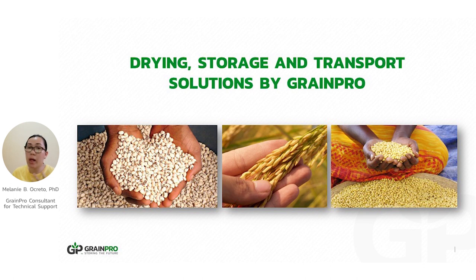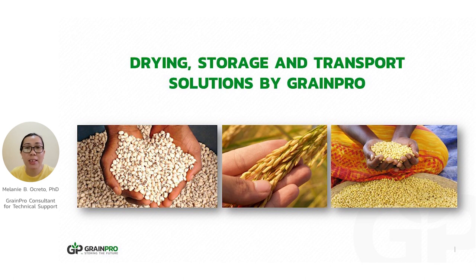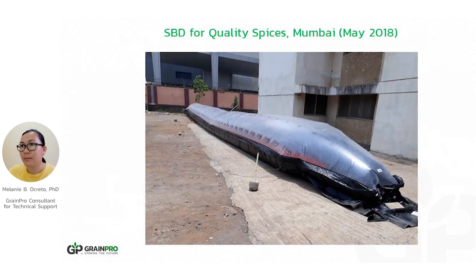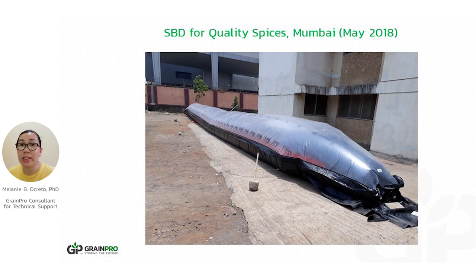We want to address the quantitative, qualitative, and economic losses brought by improper technology or methods practiced in the field. We are going to discuss the drying, storage, and transport solutions by GrainPro by presenting some actual field installations. We have the solar bubble dryer, installed in Nepal in collaboration with IRI, used to dry paddy. The solar bubble dryer is also good for drying spices such as red chili pepper — it was used in India for drying red chili pepper.